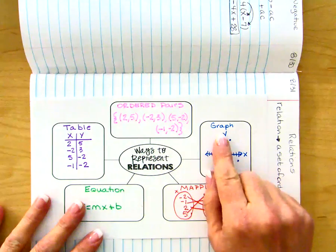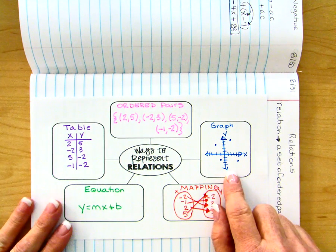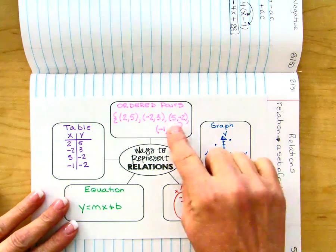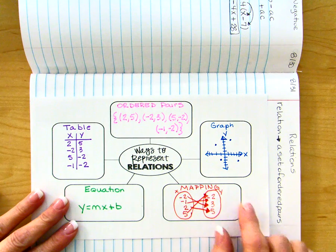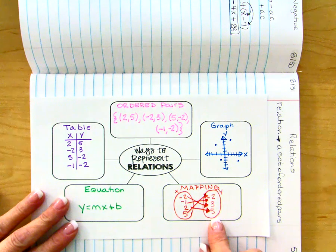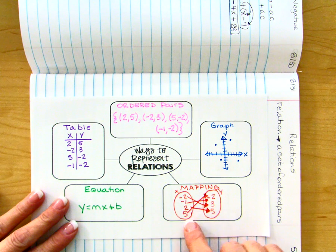I can take those ordered pairs and graph them here with an x-axis and a y-axis. I can take those same ordered pairs and turn those into a mapping where I list my x values from least to greatest and my y values from least to greatest, and then just map them to where they are supposed to be.